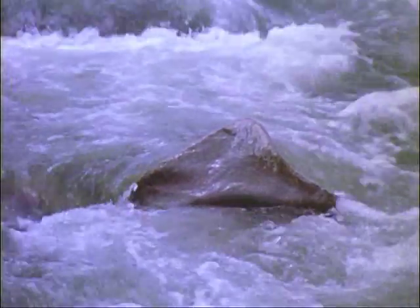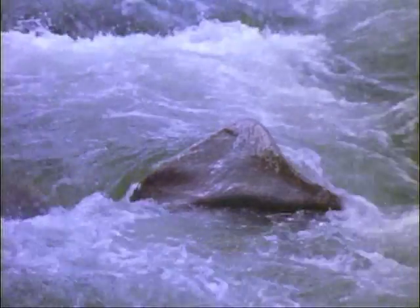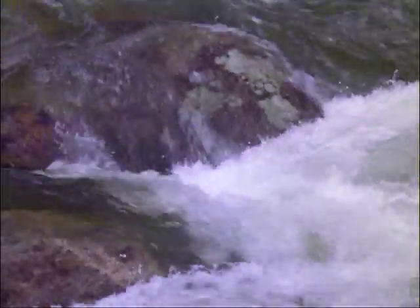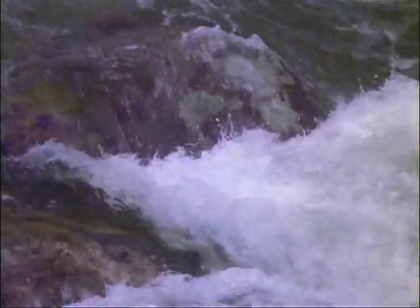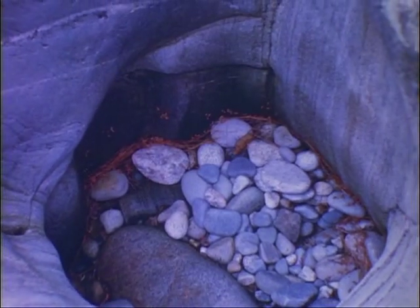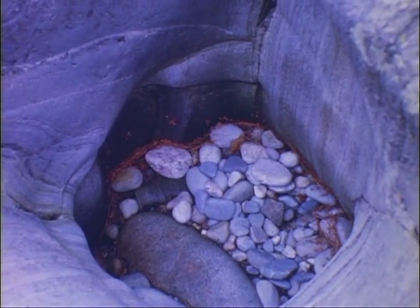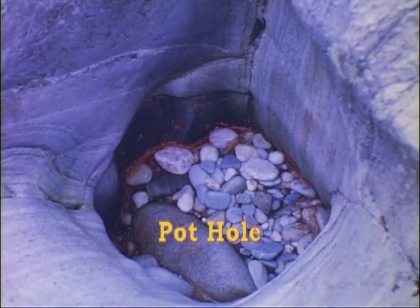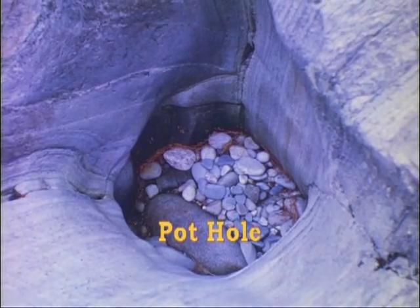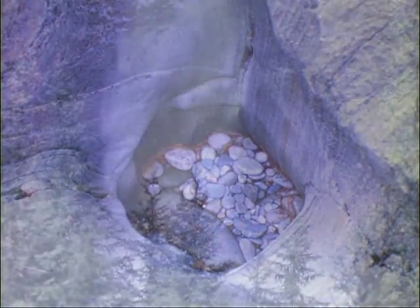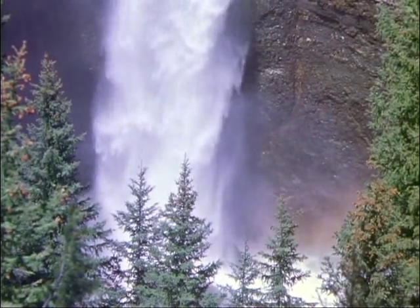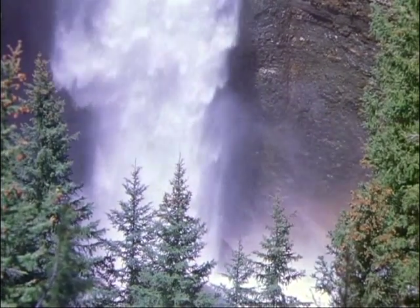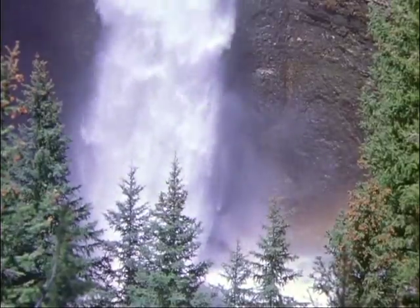Rapidly flowing water has many currents moving in several directions at different speeds. Where water swirls around an obstruction, the racing currents spin small rocks around and around, grinding holes in the stream bed. The rocks in this pothole were left behind when the water receded during a drought. The powerful force of a waterfall can gouge similar holes in the rocks at the base of the falls.